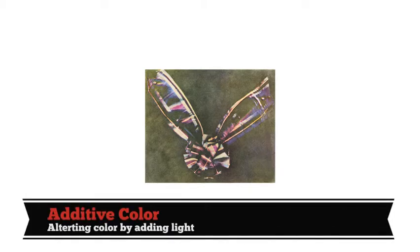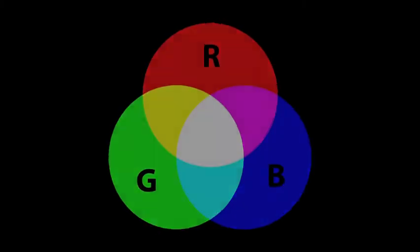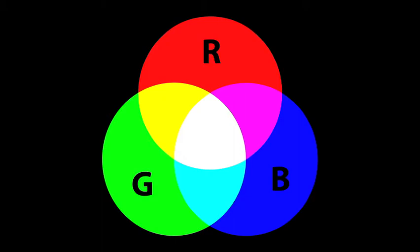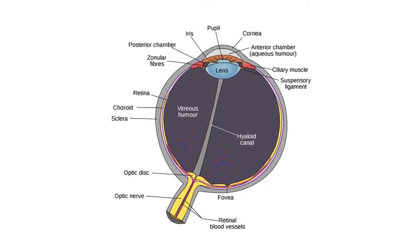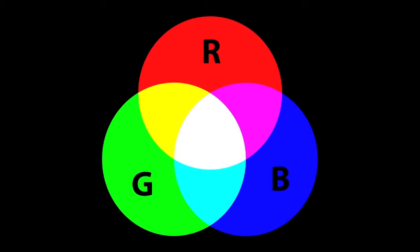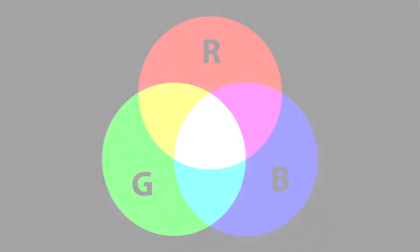Light is added together against a black background to create different colors. You're probably most familiar with additive color through the RGB color model. In theory, you can combine red, green, and blue to create most of the colors that humans can perceive. In fact, this is how your computer monitor creates such a wide variety of colors. The reason for this is because most people in the world have trichromatic color vision, and the long, medium, and short cones in the human eye perceive red, green, and blue light, respectively. Red, green, and blue light, when combined, creates white light. For example, when you're in a dark room watching something on a projector and other light washes out the image, you're simply observing too much color being added. Conversely, the color black is actually the absence of light.